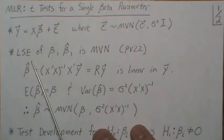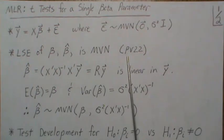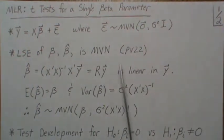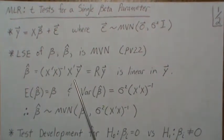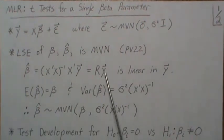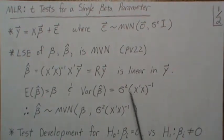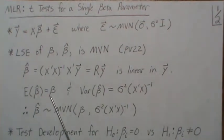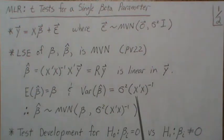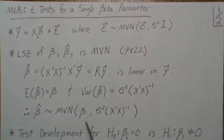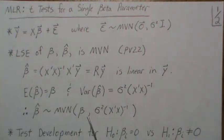The least squares estimates for beta, beta hat, is multivariate normal. This is from previous video number 22. Beta hat can be written in matrix form, and if you think of this first part as just some matrix R, then it's clearly linear in y. The expected value we showed was beta, so it's unbiased. The variance of beta hat is sigma squared times (X'X)^-1, and therefore beta hat is multivariate normal with mean beta and variance covariance matrix this.